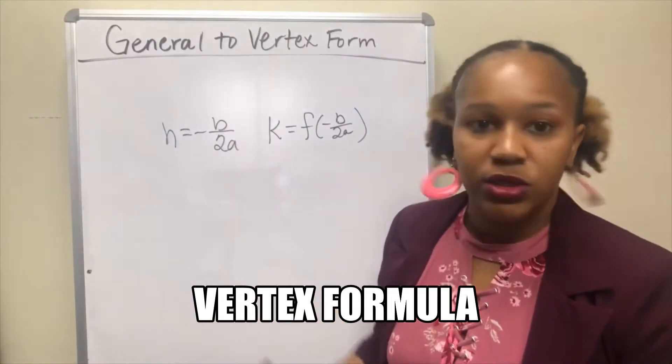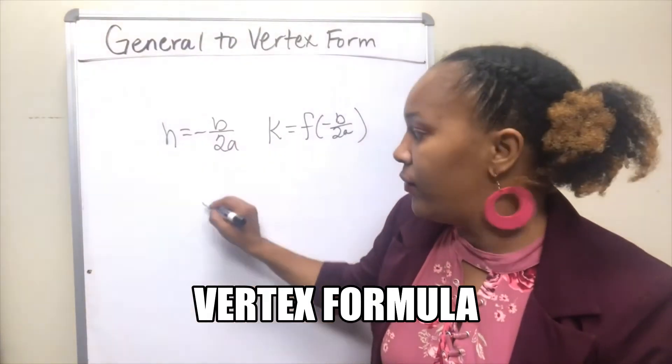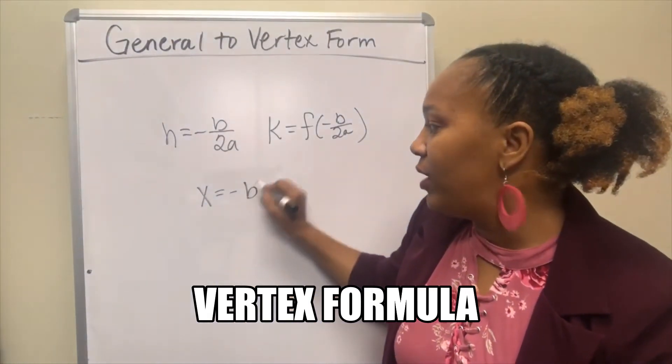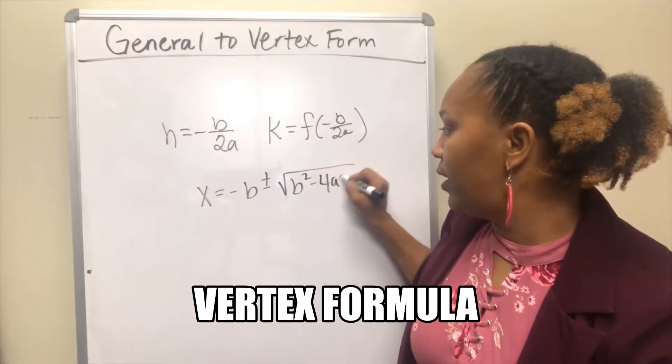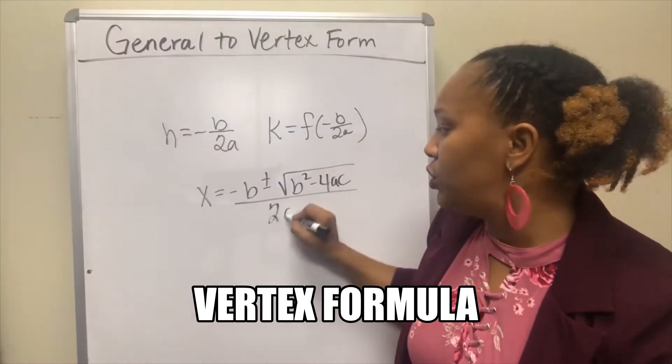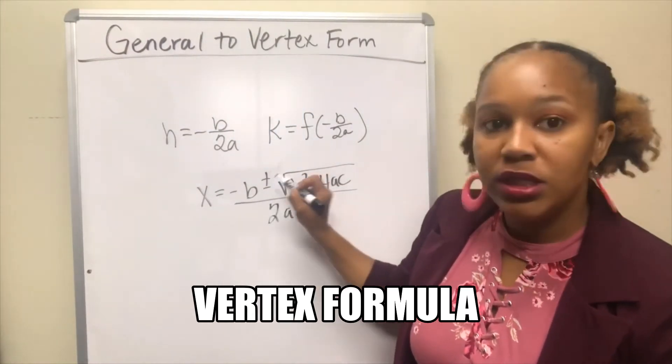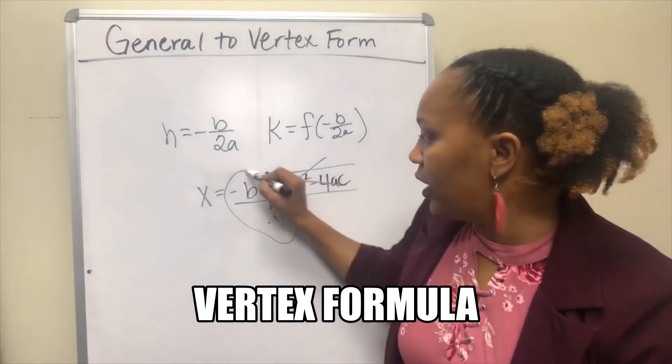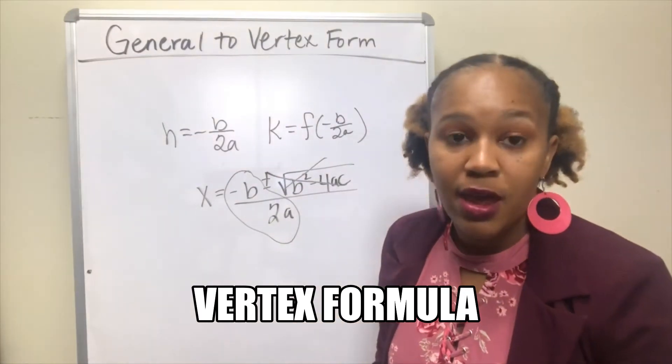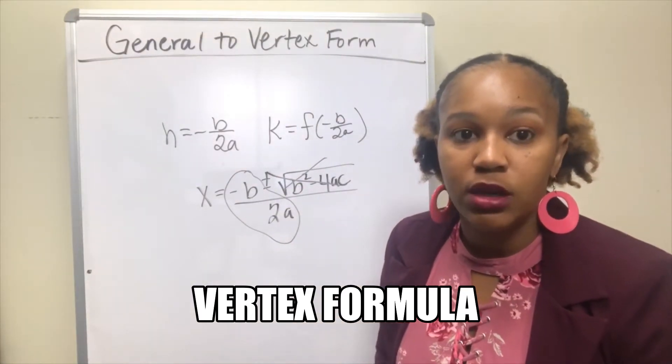Now where does this come from? Do you remember the quadratic formula? x equals negative b plus or minus square root b squared minus 4ac over 2a. Well, if we were to take out the plus or minus square root of b squared minus 4ac, we're left with the negative b over 2a, and that part is where the vertex formula comes from.